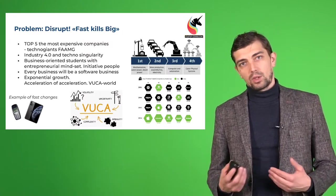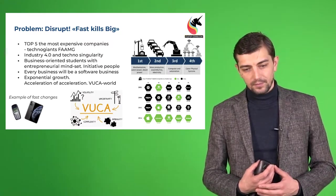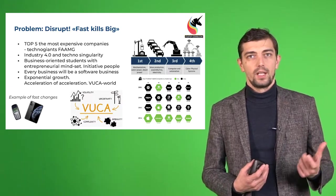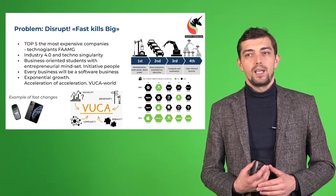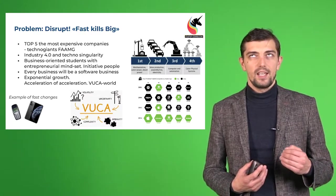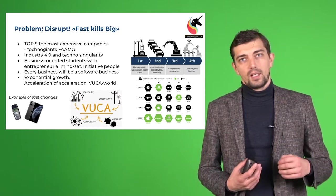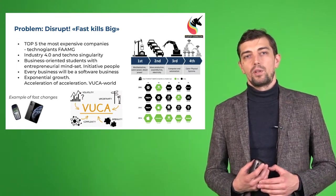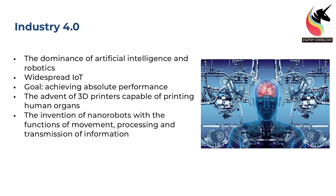Why do we talk about technological giants? In 2016, a most drastic moment happened: the top five most expensive companies became technological giants — the so-called FAAMG: Facebook, Amazon, Apple, Microsoft, and Google. One more reason why students should engage with this is Industry 4.0.